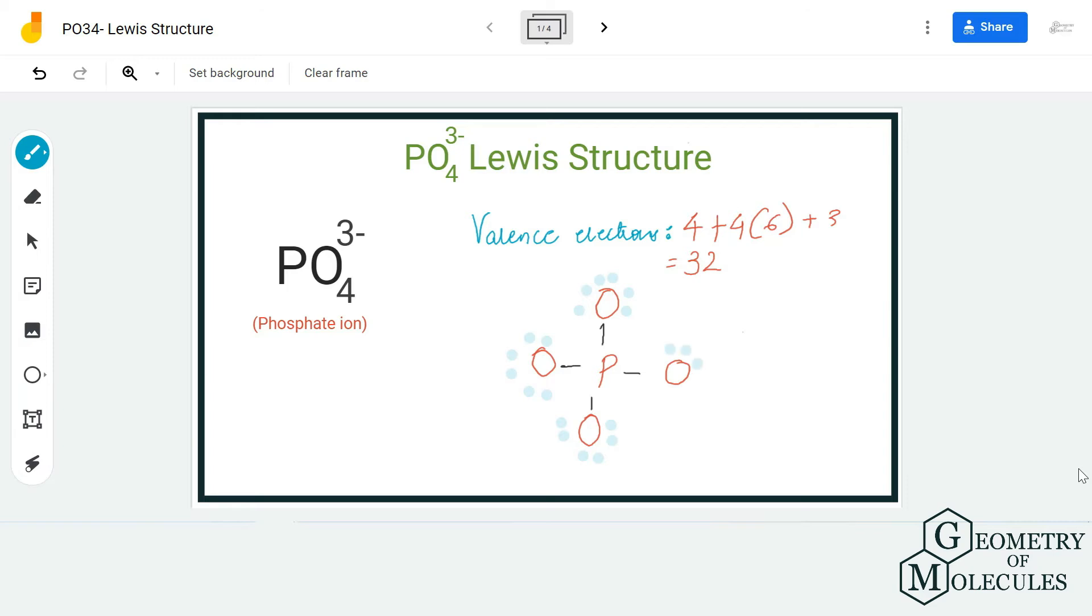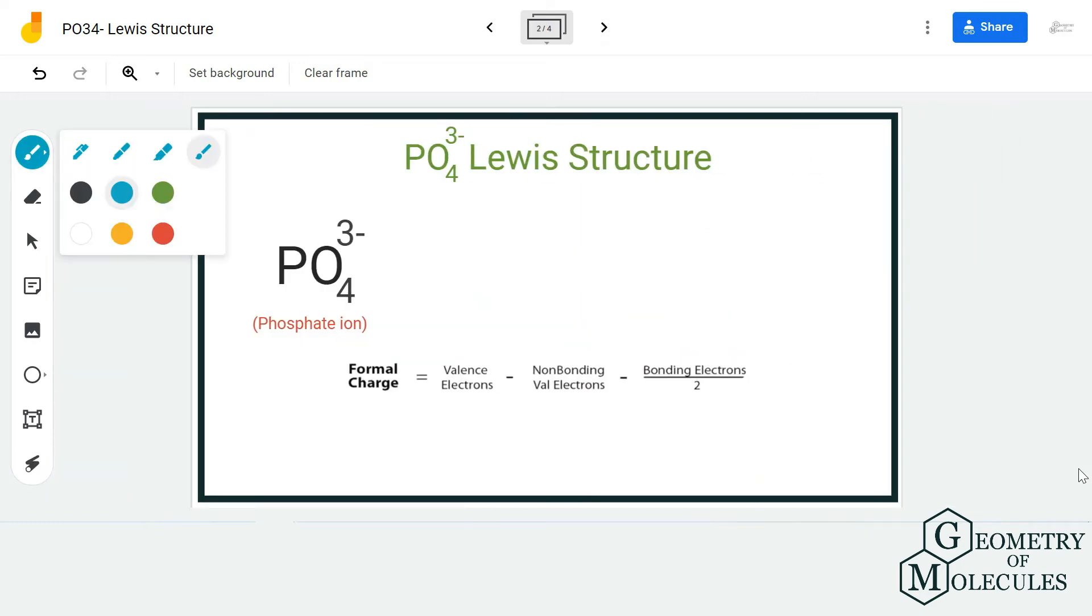This may seem as a relevant and accepted Lewis structure for phosphate ion, but hold on—phosphorus is a group 3 element and it can have more than 8 electrons in its octet. Hence, we have to check if the formal charges of all the atoms in this are as per the charges given over here. For calculating that, we have this formula.